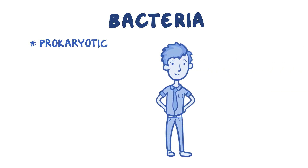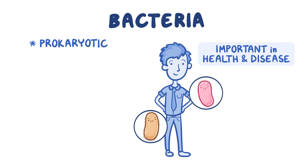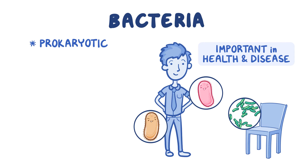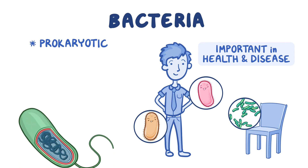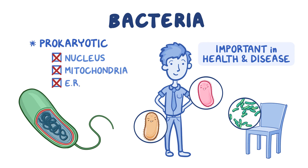Bacteria are prokaryotic cells that play an important role in human disease and health. They can cause disease but are also part of the human microbiota and live on our skin, body, and on everyday objects in our environment. When compared to eukaryotic cells, the structure of bacteria is less complex due to a lack of nucleus and membrane-bound organelles such as mitochondria, endoplasmic reticulum, and Golgi complexes.